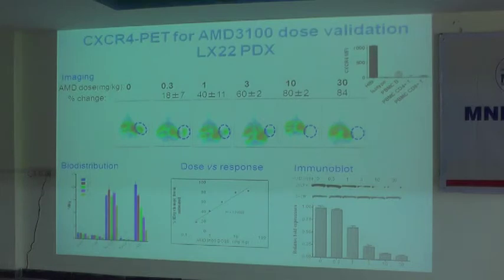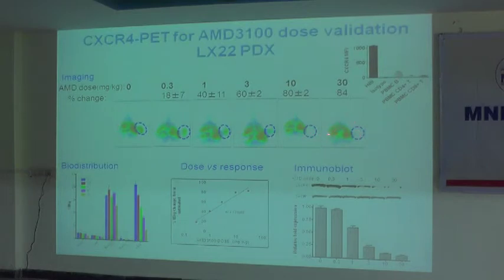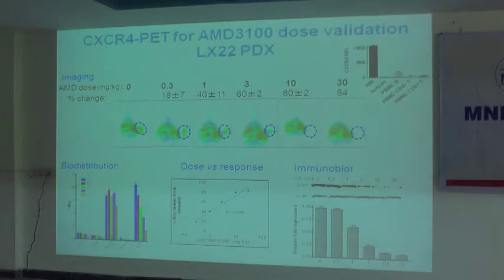Because we are blocking the CXCR4 receptor, what we observed — not surprisingly — is that in the control you can see the tumor nicely. As we increase the dose, the tumor uptake drastically decreases; by about 10 mg/kg we don't see much imaging agent uptake in the tumor at all. This told us that the drug we are injecting is actually acting at the tumor and reducing the protein expression there. But by doing all of this, we still don't have any effect on the tumor growth.